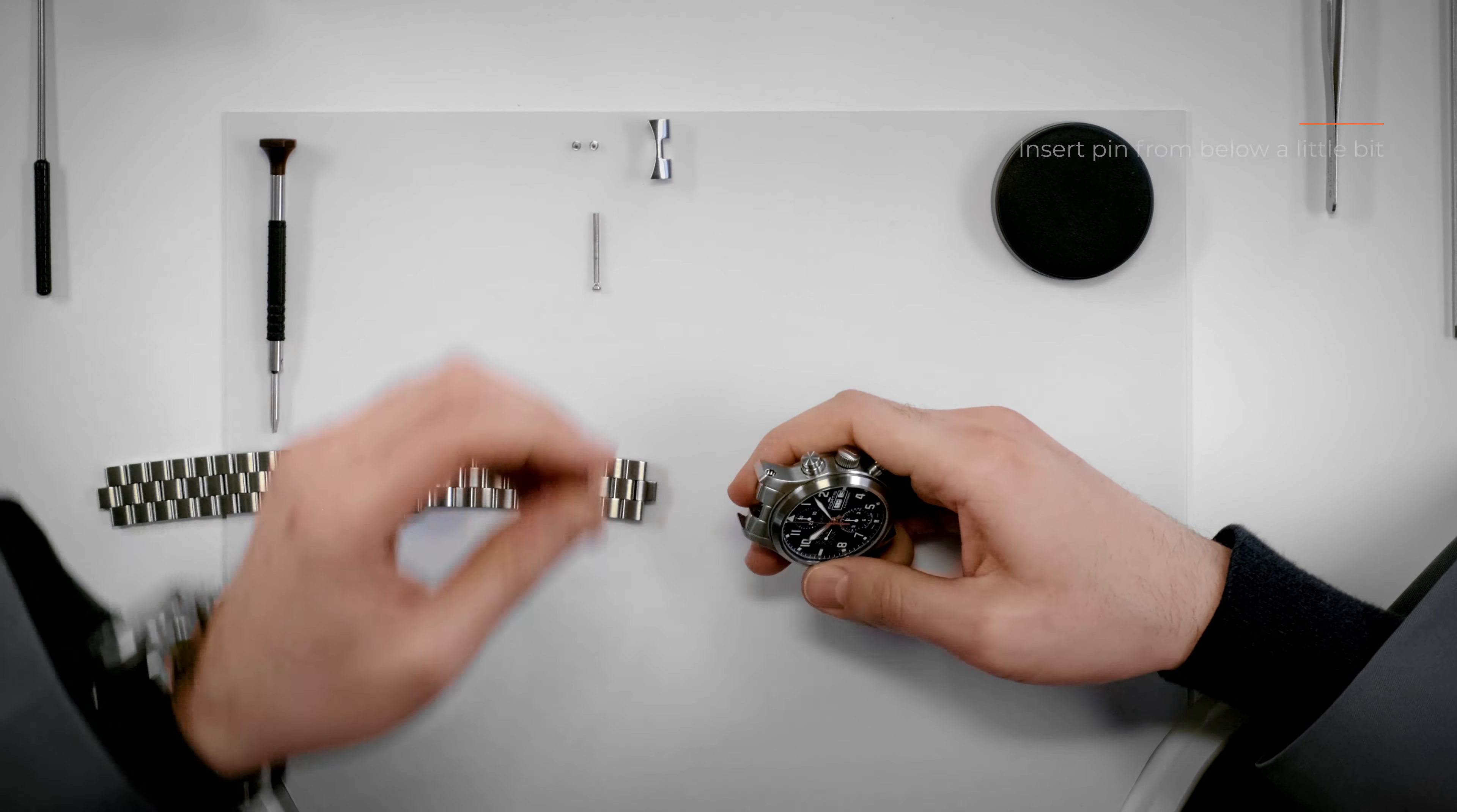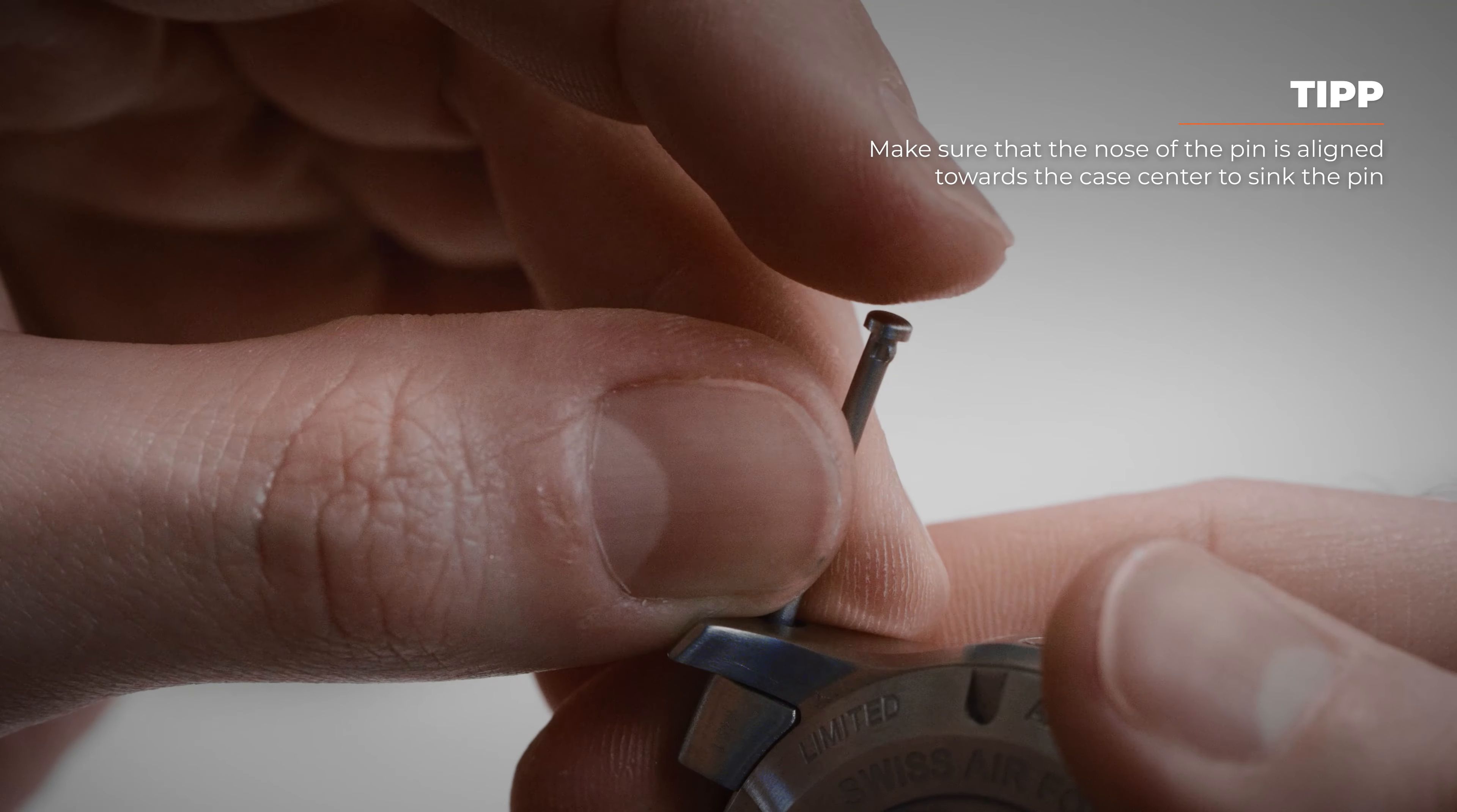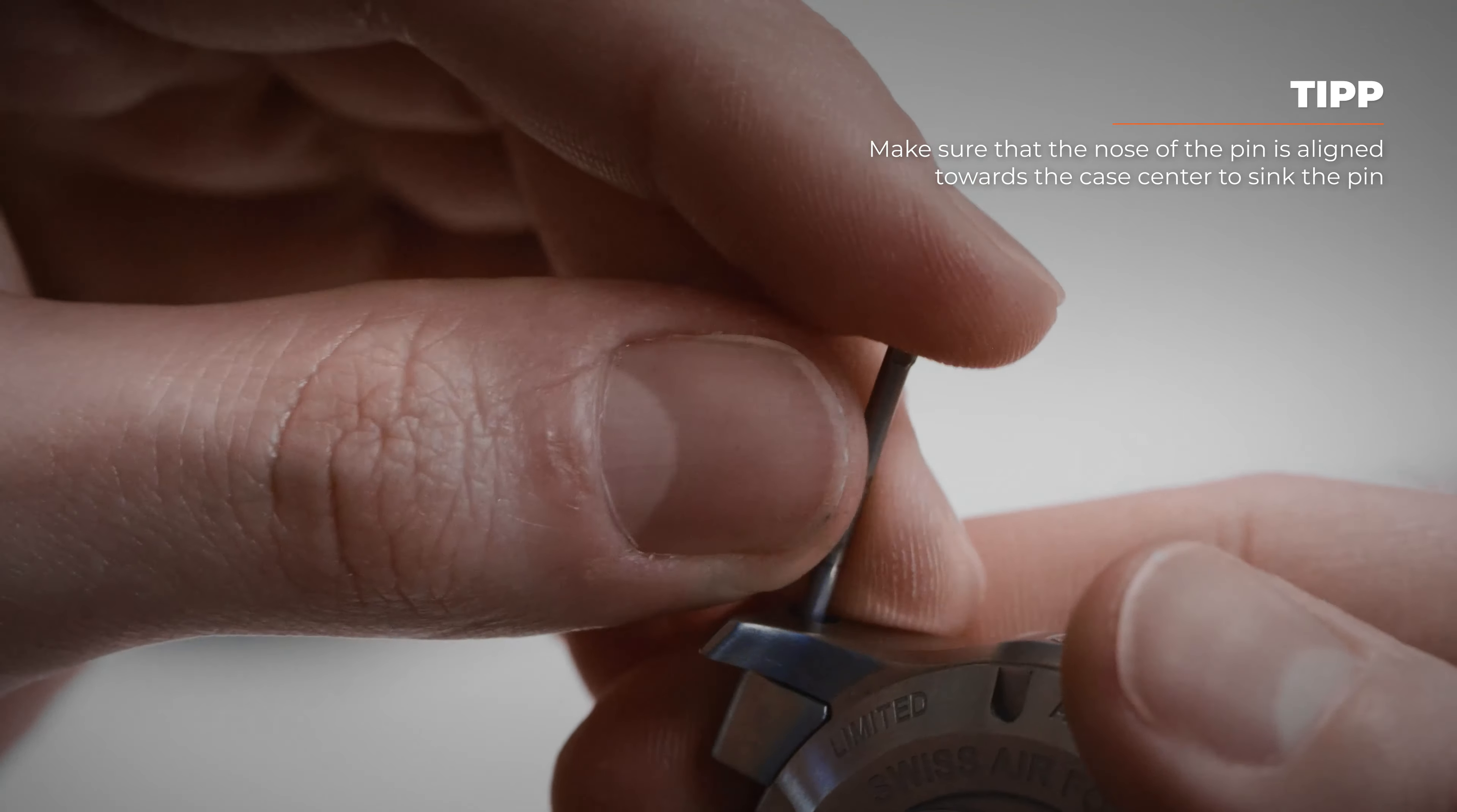Now, put the pin through. To make sure that nothing wobbles afterwards and everything can be screwed together cleanly, the pin has a small nose at the head end which holds it in position within the case. Align this nose towards the center of the watch to ensure the pin sinks in.